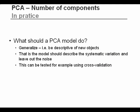When we have to determine the number of components, what should the PCA model do? We want the PCA model to generalize our data — finding the systematic variation that is not specific to the samples we have now, but which tells us something about the population they represent and about other similar samples. So the model should describe the systematic variation and leave out the specific noise. A fairly straightforward way to test that is by the use of cross-validation.